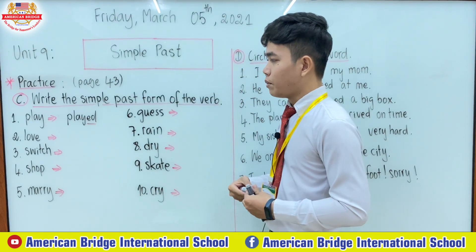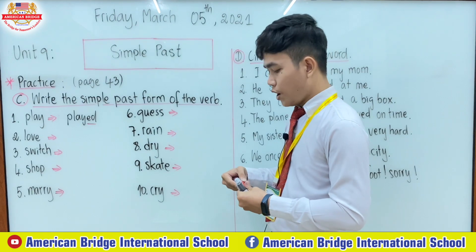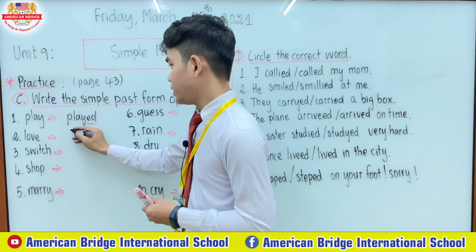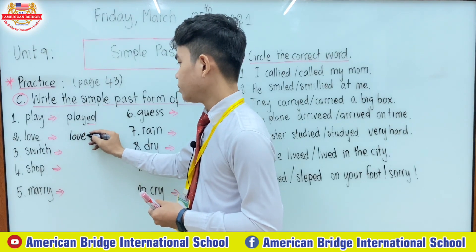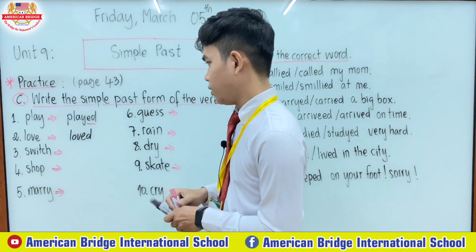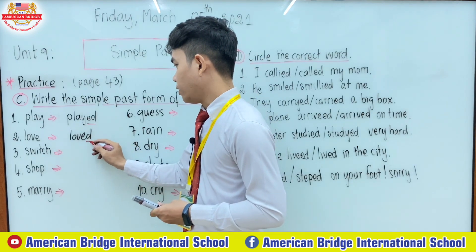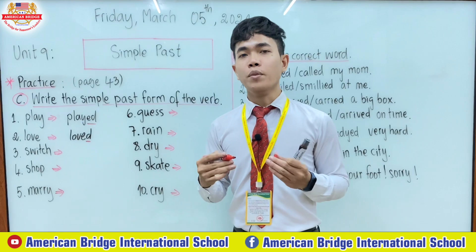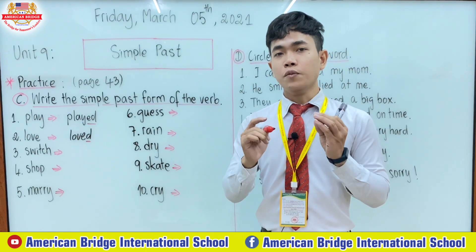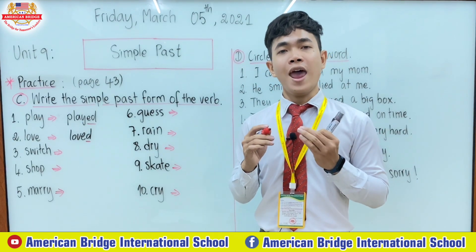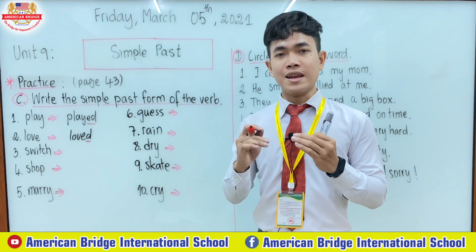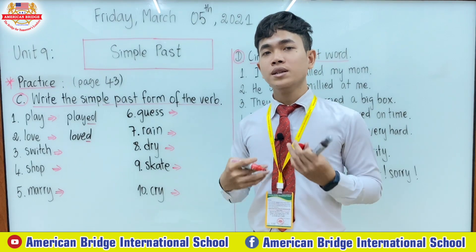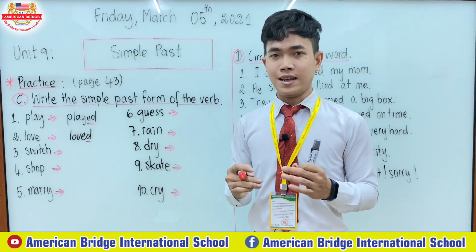Number two: 'love'. How can you change the verb 'love' into the simple past? You just add only -d. Why don't we add the full -ed? Because the verb 'love' already has the letter e at the end. So we don't have to add more -ed, we just add only -d.